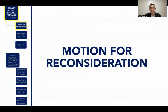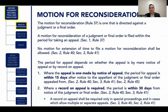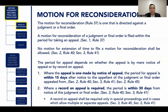Let's begin our discussion with motion for reconsideration. A motion for reconsideration is one that is directed against a judgment or final order, filed within the period for taking an appeal. Take note that no motion for extension of time to file a motion for reconsideration shall be allowed under the Rules of Court. The period for appeal depends on whether the appeal is by mere notice of appeal or by record on appeal. If appeal is made by notice of appeal, the period is within 15 days after notice to the appellant of the judgment or final order appealed from.